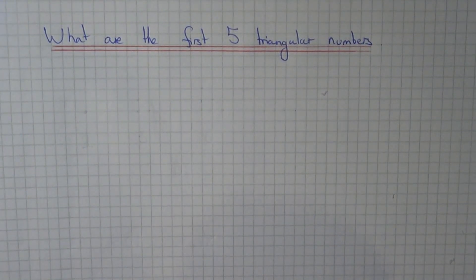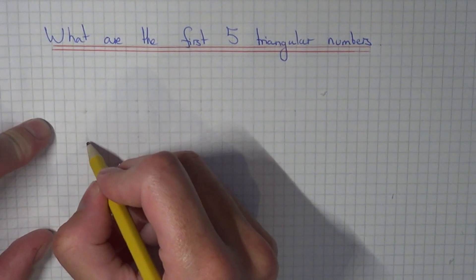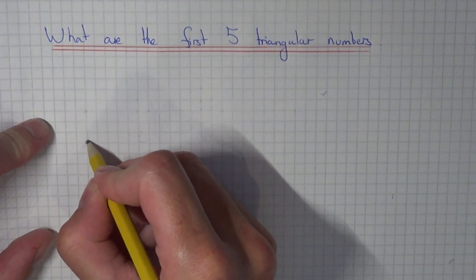Today I'm going to show you how to find the first five triangular numbers by making patterns of triangles. So the first triangular number is the number one, so it's just one dot.